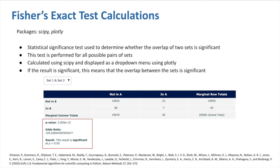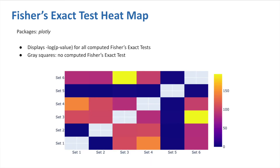With an odds ratio much larger than 1, the association between the sets is strong. If we get a significant result, this indicates that the overlap among the sets is significant. To consolidate all the calculations from Fisher's Exact Test, a heatmap is produced to view all the possible overlaps within a single figure. This displays the negative log of the p-values that were computed. The empty squares show the non-important overlaps, since it's not helpful to check the overlap of a set with itself.